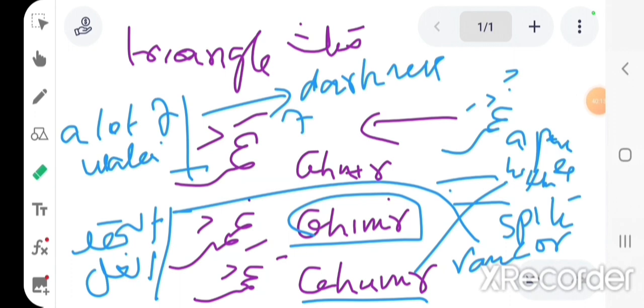So he's an ignorant person. A ghamr is an ignorant person, but in the meaning that he doesn't have much life experience.